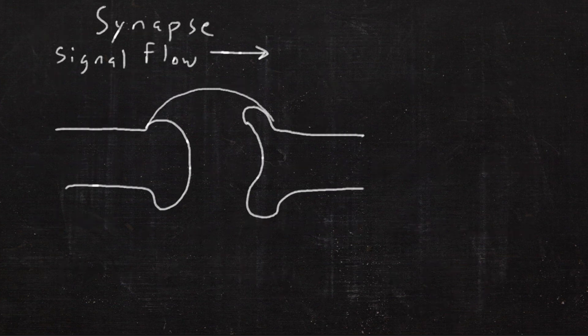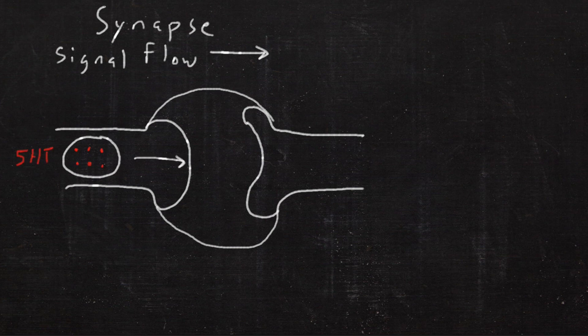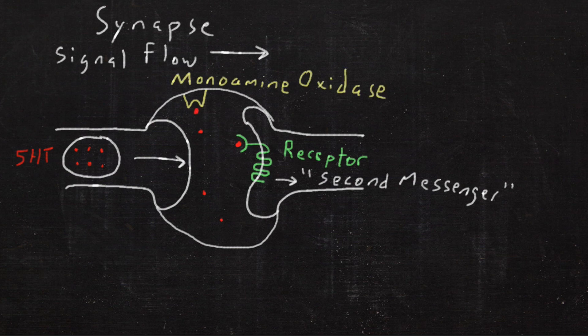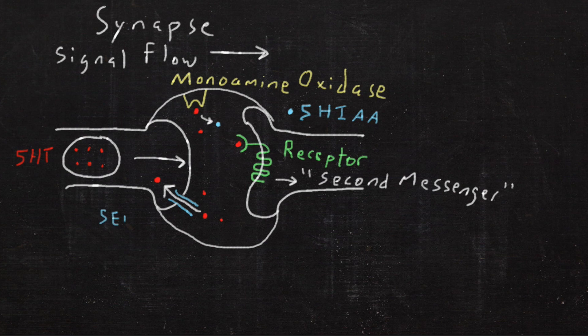In the synapse, signal flow imagined from the left to the right. Down the axon comes serotonin into the synaptic cleft. It might hit a receptor and trigger some messages. It might get degraded by monoamine oxidase, or it might get taken back up by the serotonin transporter.